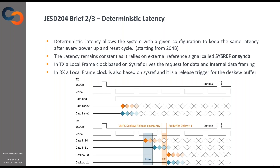Moving to the second of three slides on the standard specifics: deterministic latency. This feature was introduced in the B version of the standard, where you maintain a constant latency from the data coming into the system at the TX and exiting at the RX, which is very useful for certain types of applications. We achieve this feature by using a system reference signal called SysRef.